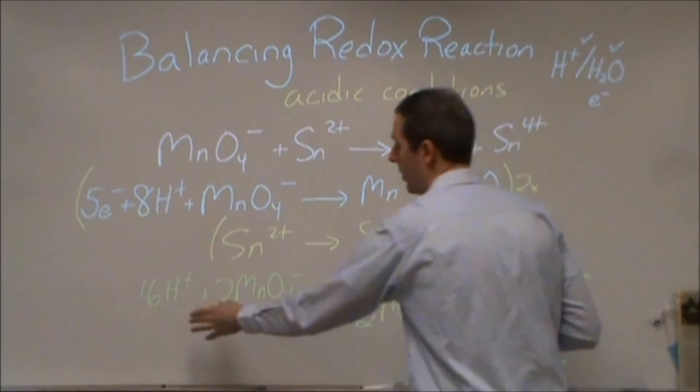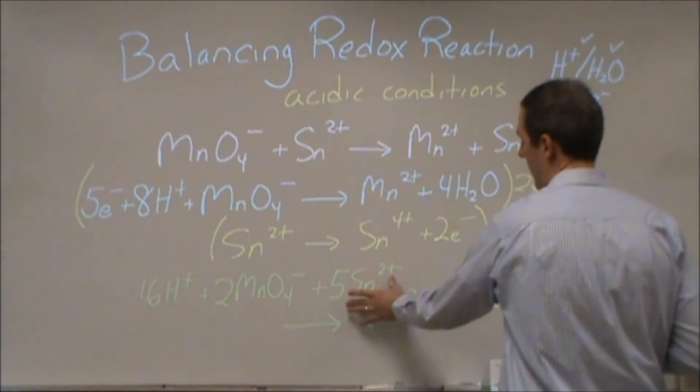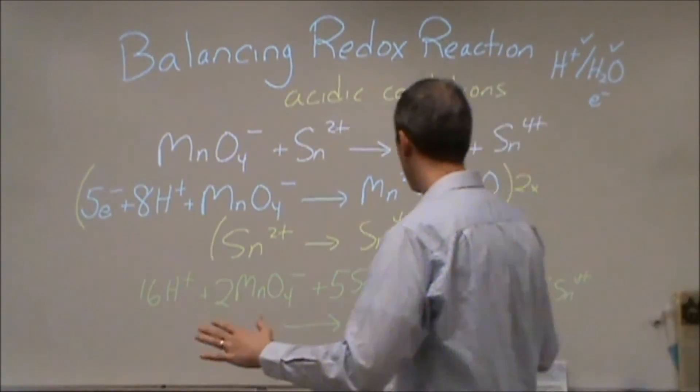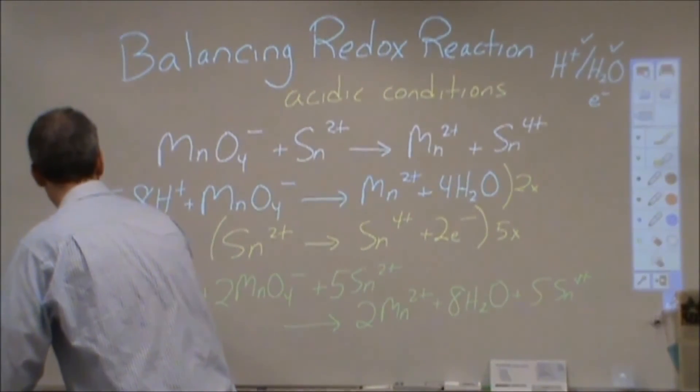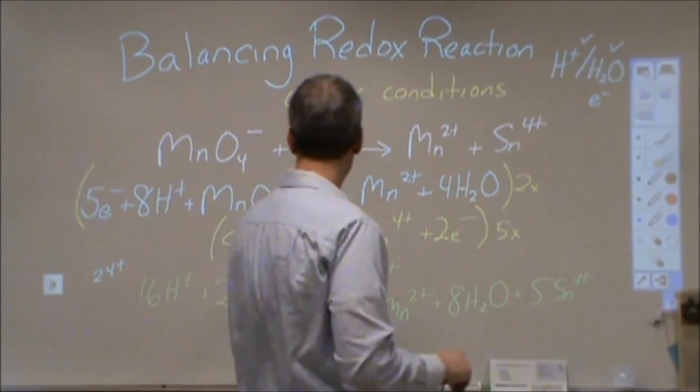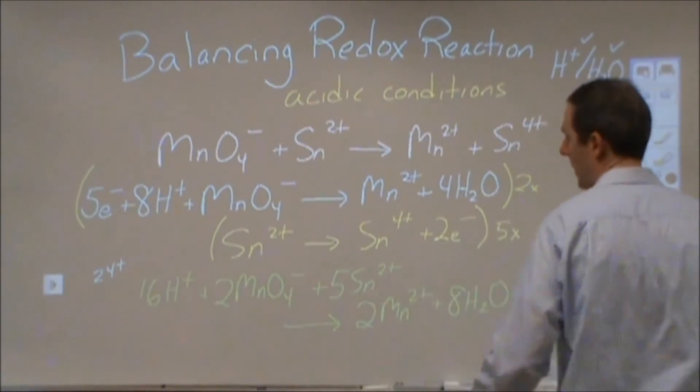And so we have sixteen pluses, two minuses, and ten pluses. So total charge for the reactant side, we are starting with twenty-four plus. Sixteen minus two is fourteen, plus ten, twenty-four.